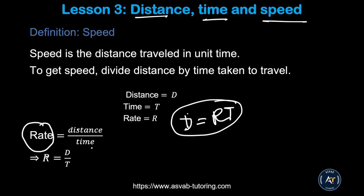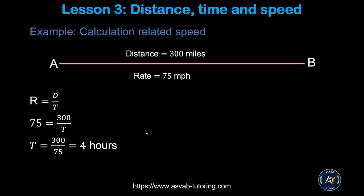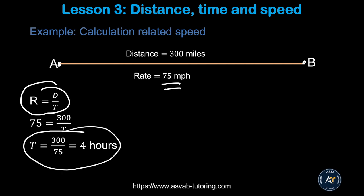You also need this in mechanical comprehension for tests like the ASTB. Now let's do a problem. Say you are driving from point A to point B, which is 300 miles apart. If you drove at 75 miles per hour, how long did it take to go from point A to point B? Write the formula: rate equals distance over time. With rate = 75 and distance = 300, solving gives you T = 4 hours. So if you drive 300 miles at 75 miles per hour, you need 4 hours.